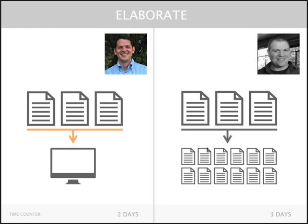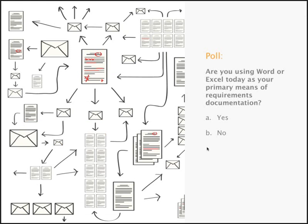Meanwhile, the analyst on the right has taken the document and is starting to rewrite new documents — thinking about templates and format, possibly creating an Excel doc for priority alongside the specification. They may save versions periodically in case they need to go back. There are lots of techniques we use to overcome the limitations of Word, whereas on the left-hand side, everything is versioned and tracked — basic capabilities in any requirements software.